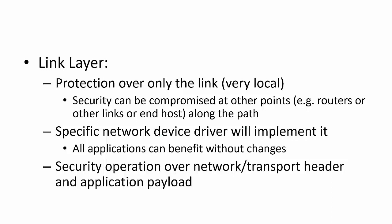Link layer security means you are only offering protection over that specific link — it is very local. So if there are two nodes A and B with a link between them, you are trying to protect what happens over this link. The security can be compromised at other points. For example, if A wants to send packets to a server on the internet and B is a wireless access point, link layer security only protects communication from A to the access point. After that, if a router is malicious, it can potentially do something to those packets. The specific network device driver will implement link layer security, and all applications can benefit without any changes.